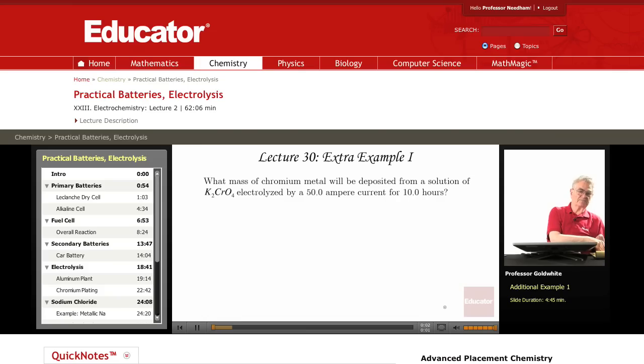In an electrolysis problem, we need to recall that a Faraday, which is the charge carried by a mole of electrons, is 9.65 times 10 to the fourth coulombs, and a coulomb is 1 ampere times one second.